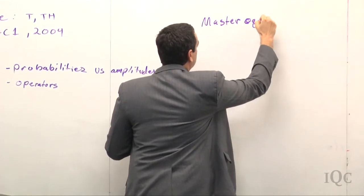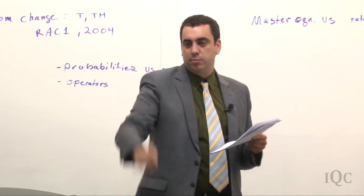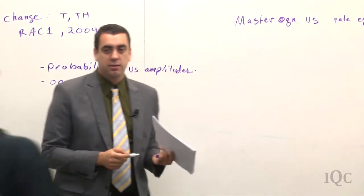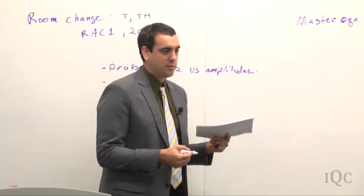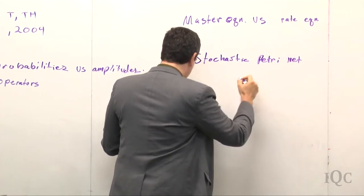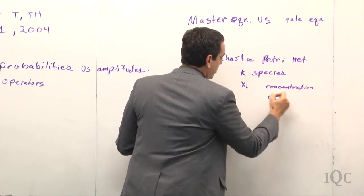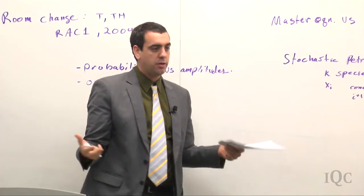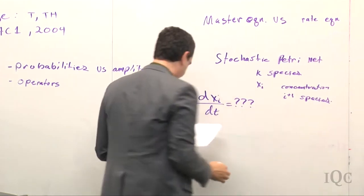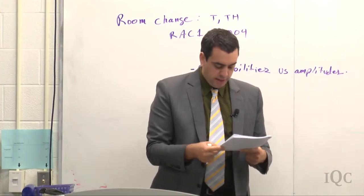The master equation versus the rate equation. Given a stochastic Petri net — please go ahead and pick up a couple of the handouts; the book is available on my webpage — a stochastic Petri net has k species, and x_i is the concentration of the i-th species. Just like in quantum mechanics, we want to know how this quantity changes in time. The right-hand side is going to be a sum of terms, one term for each transition in the Petri net.